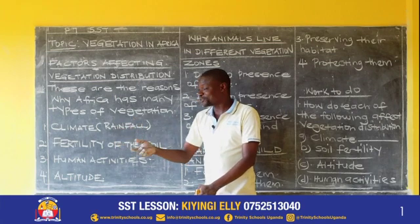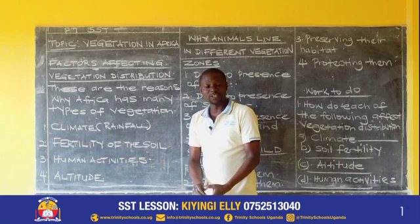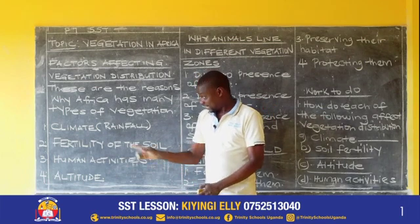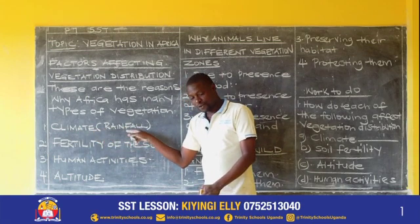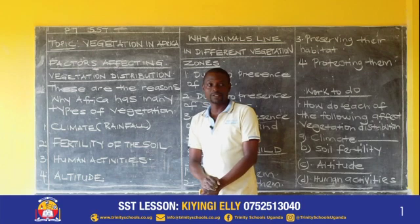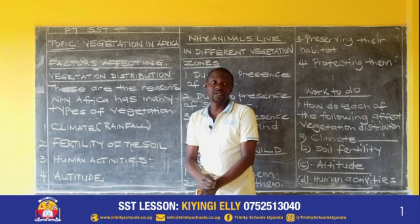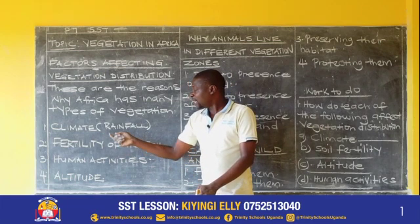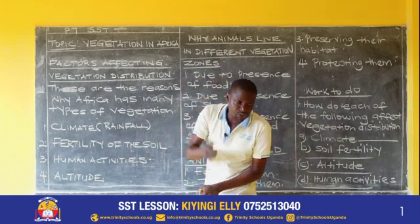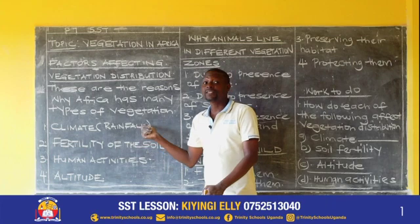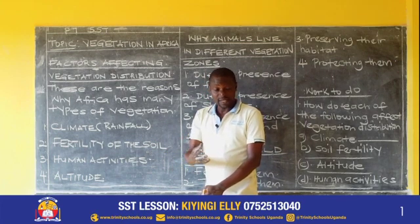This lesson is on the internet. You can even replay. You have that option of replaying it, and you get my explanation, so that when you reach the exercise, you can get the answer. Now, climate — how does climate or rainfall affect vegetation distribution? How does climate make Africa not to have the same type of vegetation? Places which receive much rainfall have more vegetation than places which have little rainfall. The more the rainfall, the more the vegetation. The less the rainfall, the less the vegetation.